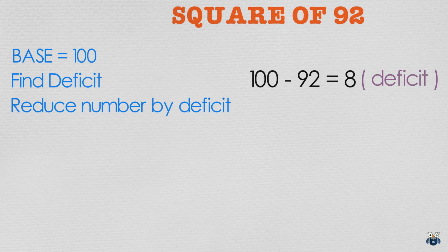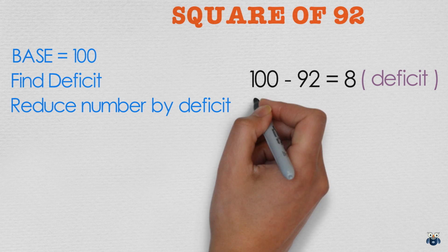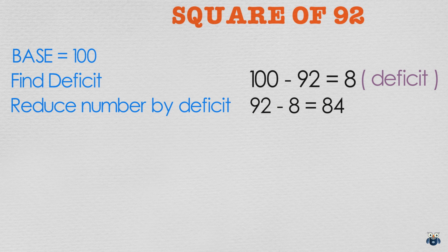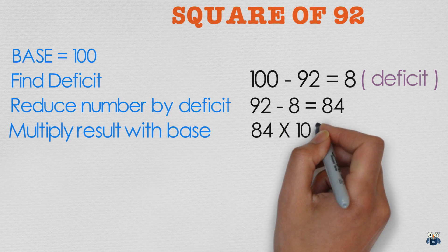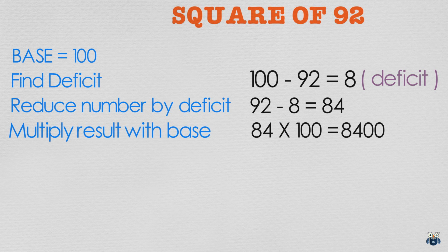Now since 92 is less than our base, we reduce it further by the deficit. So 92 minus 8 is 84. We then multiply this result with our base. 84 times 100 is 8400.